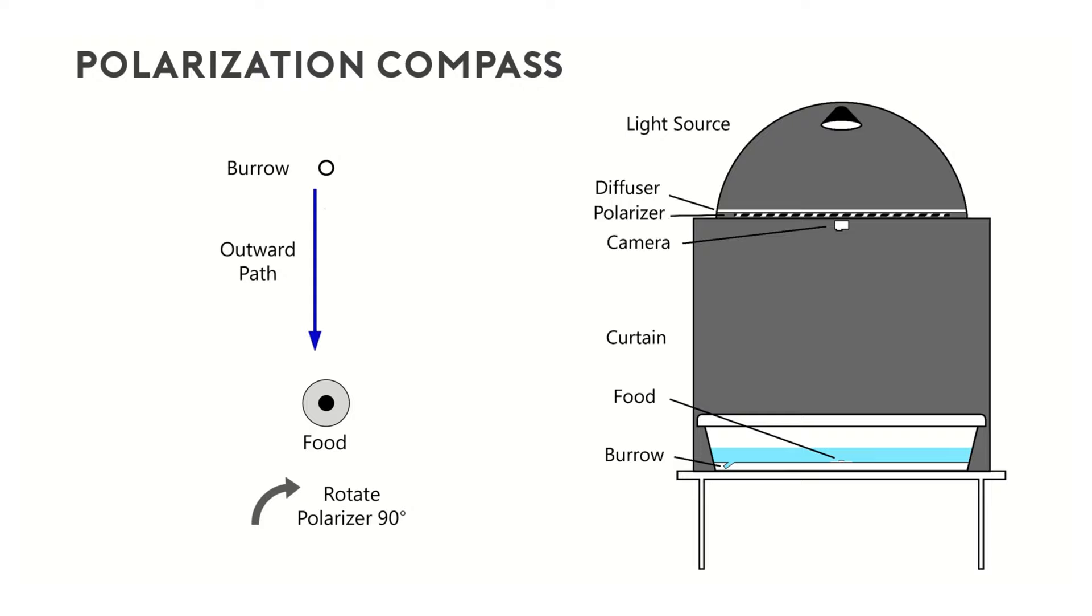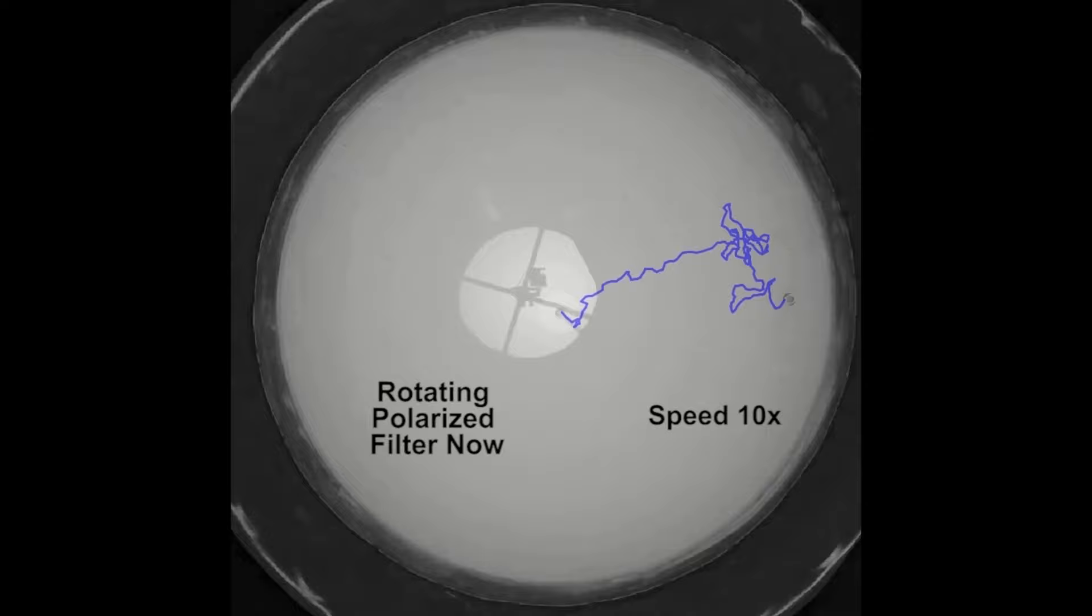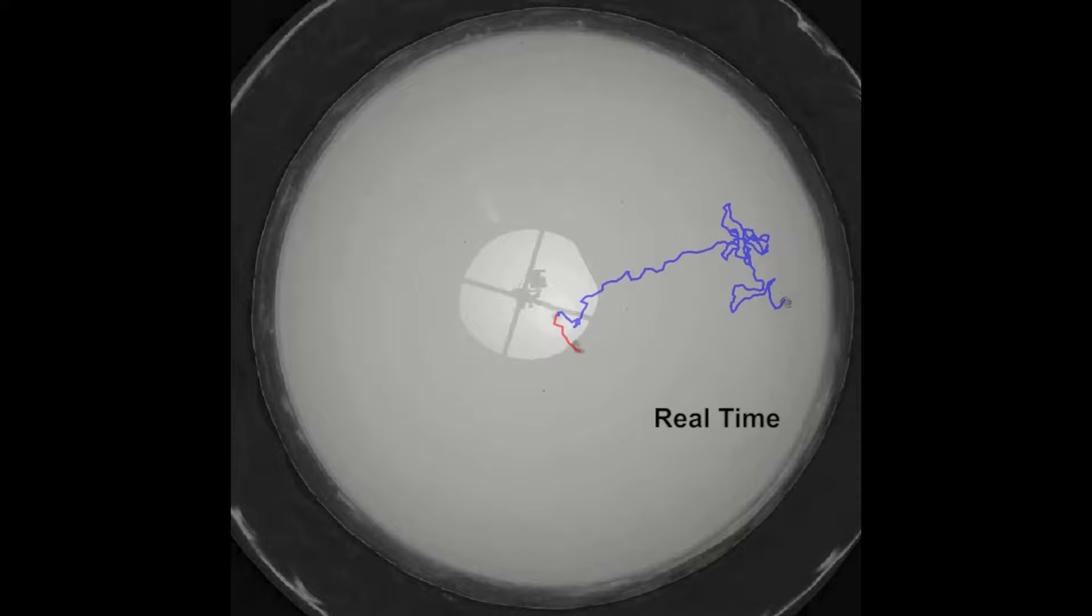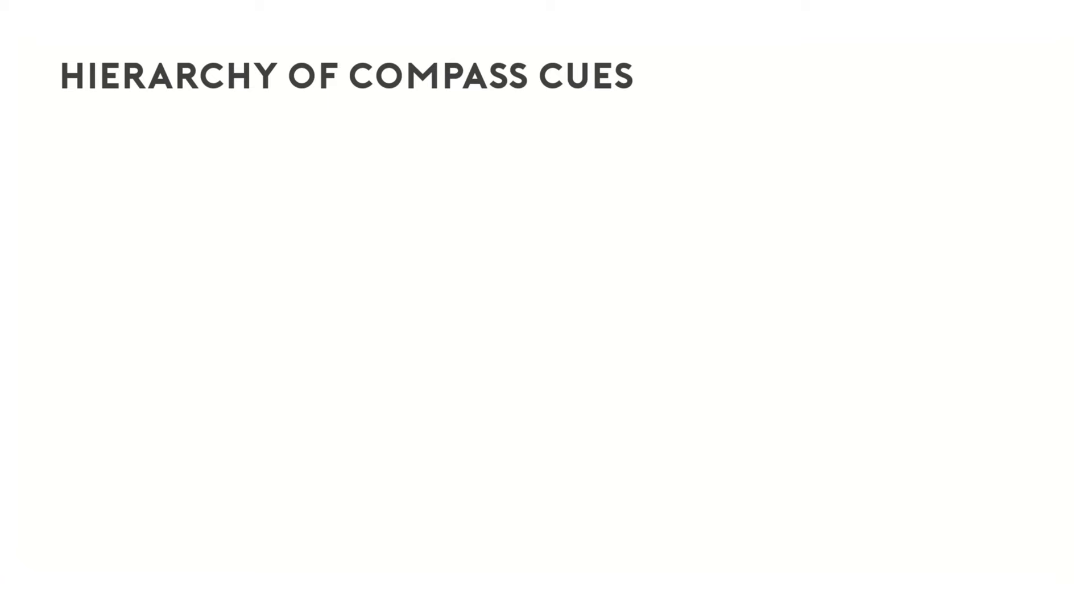If mantis shrimp used overhead polarization patterns for orientation, they should orient their homeward paths perpendicular to the direction of their burrows. Under this condition, we found that mantis shrimp did indeed orient their homeward paths perpendicular to their burrows, demonstrating that they use overhead polarization patterns viewed through the water's surface for orientation.